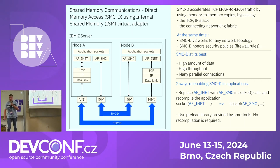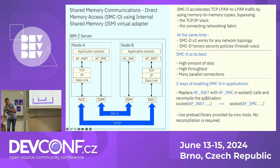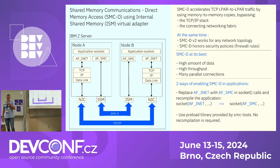Unless both communication partners support SMC, the connection automatically falls back to TCP/IP. There are two methods to enable SMC in your application: first, replace all socket calls' first parameter AF_INET with AF_SMC and recompile your application. If you don't have the source code or don't want to recompile, you can use a preloaded library from the open source SMC tools package, which intercepts all socket calls and dynamically replaces AF_INET with AF_SMC without modifying your application.